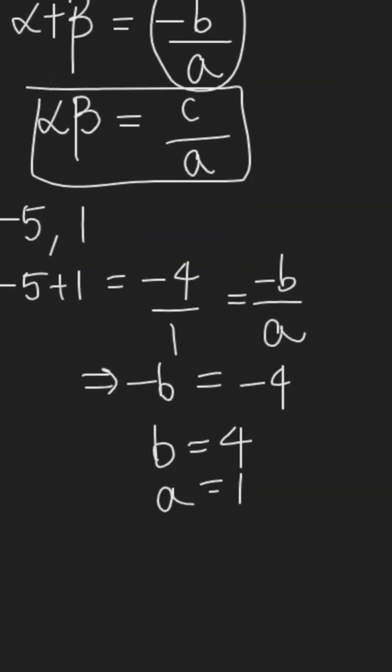Now we will do the product of zeros, that is negative 5 multiplied by 1, which is equal to negative 5, which can be written as negative 5 over 1. Comparing this with c over a, we get the constant term c as negative 5 and the coefficient of x square as a.